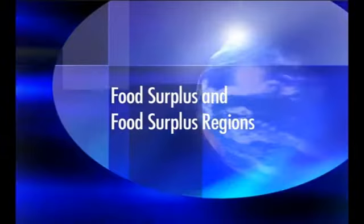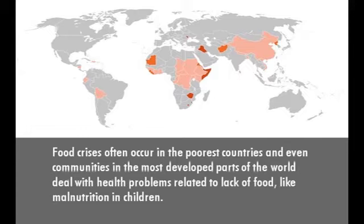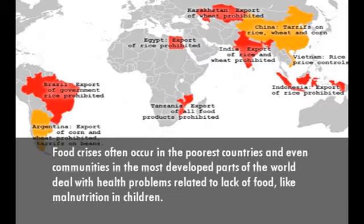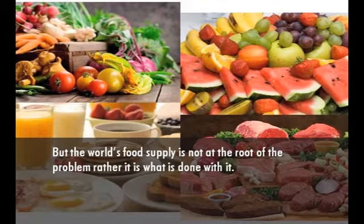Food Surplus and Food Surplus Regions. Hunger is widespread, especially in developing countries. Food crises often occur in the poorest countries, and even communities in the most developed parts of the world deal with health problems related to lack of food, like malnutrition in children. But the world's food supply is not at the root of the problem; rather, it is what is done with it.